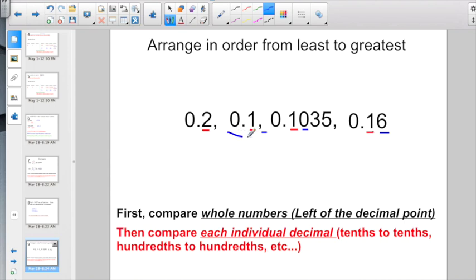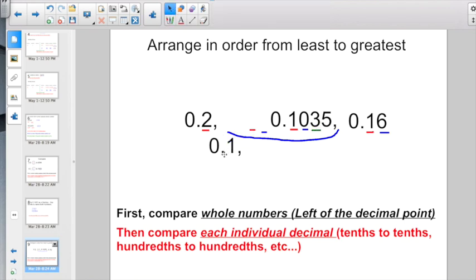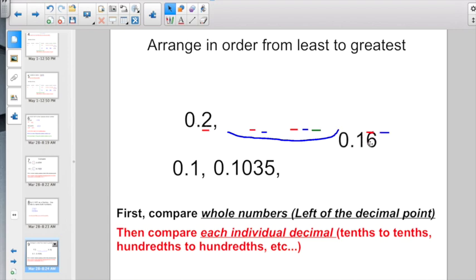So it's got to be starting off between these two numbers. Let's go and take a look. Nothing in the thousandths, this has 3 in the thousandths. So I found my first smallest number is going to be 1 tenth. My next smallest number is going to be 1,035 ten-thousandths. And this one was pretty easy. Here we had 2 in the tenths place and 1 in the tenths place. So my next smallest number is going to be 1,600ths. Finally, my greatest number, 2 tenths.